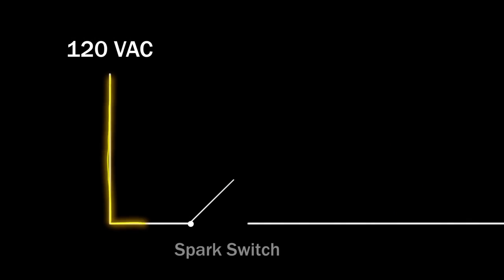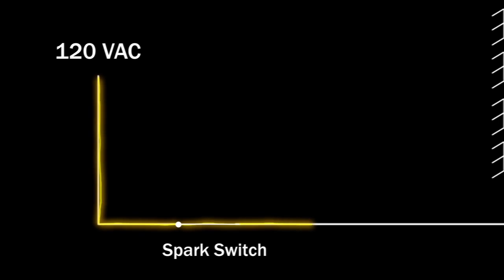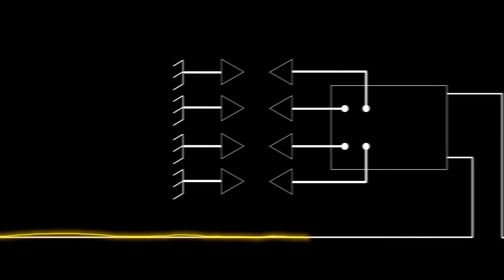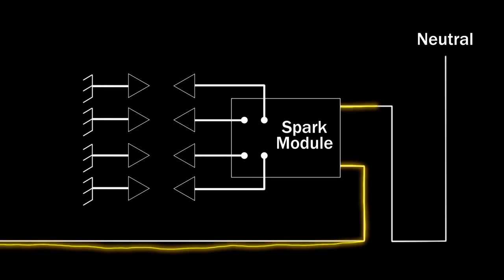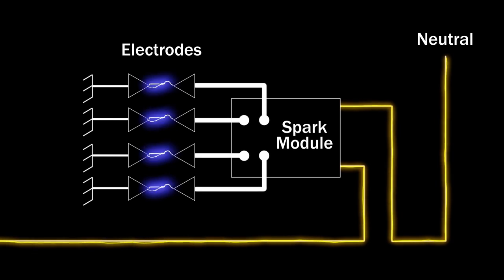At the same time, the spark switch closes, allowing 120 volts of alternating current to travel to the spark module, which produces high voltage pulses to all of the electrodes.